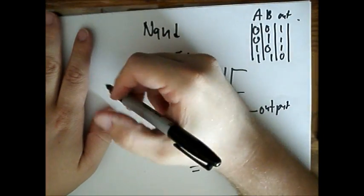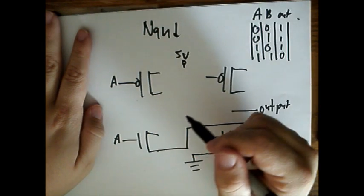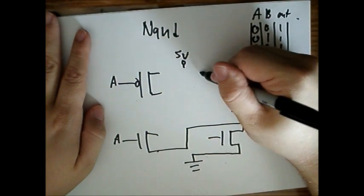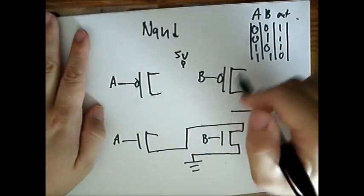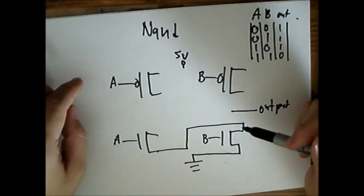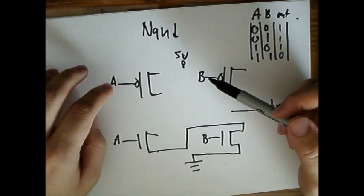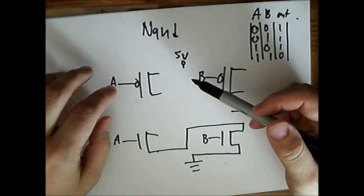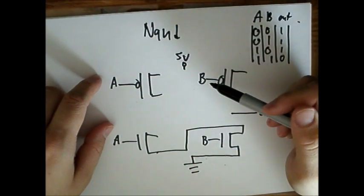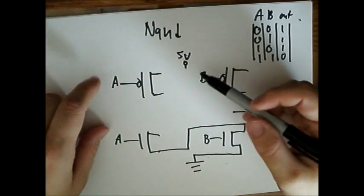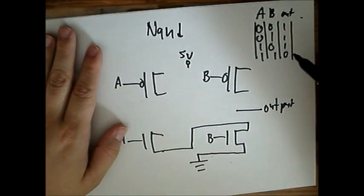So we're going to draw our series connection to our ground. And I should have done this first, but always label your input voltages, or what I like to call deciding voltages of A and B. And if you don't remember exactly where to put these variables, just keep in mind that there has to be a variable for every channel.